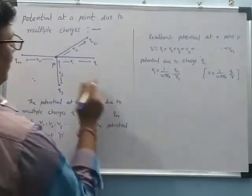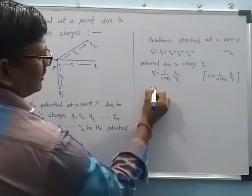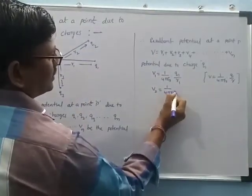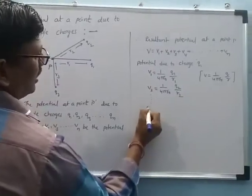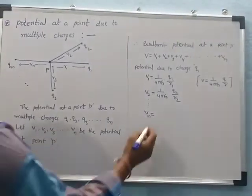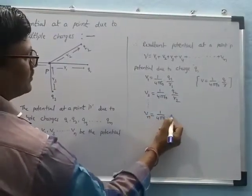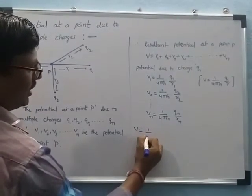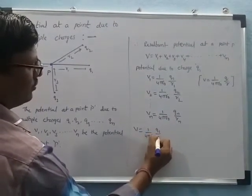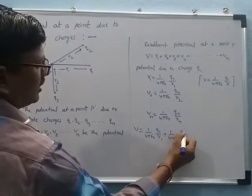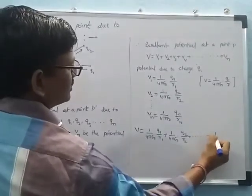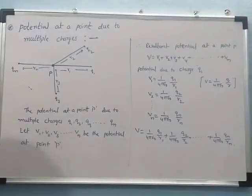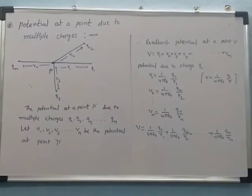Similarly, the electric potential due to charge q2 equals (1/4πε₀)(q2/r2), and so on. Therefore, the total electric potential at the point is: V = (1/4πε₀)(q1/r1) + (1/4πε₀)(q2/r2) + ... + (1/4πε₀)(qn/rn). This is the formula for electric potential at a point due to multiple charges.